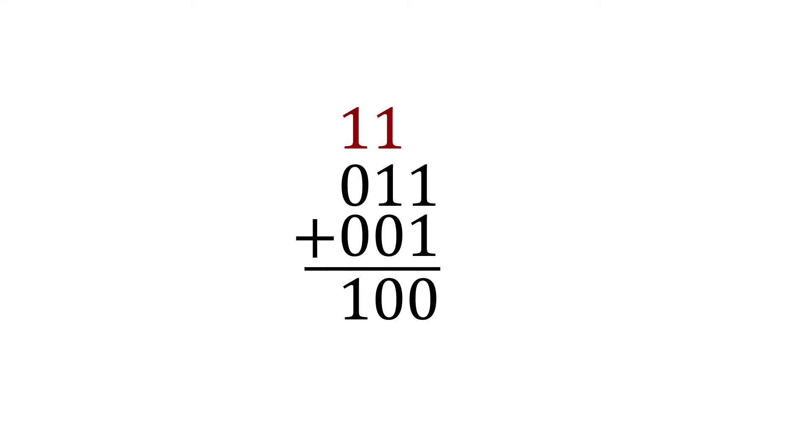Let's double check our answer in decimal numbers. 011 is the decimal number 3. 001 is the decimal number 1. 3 plus 1 is 4, which is the binary number 100. So our work checks out.